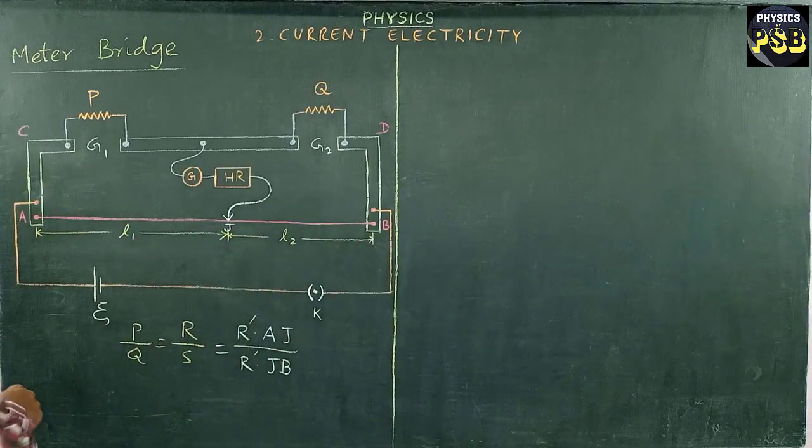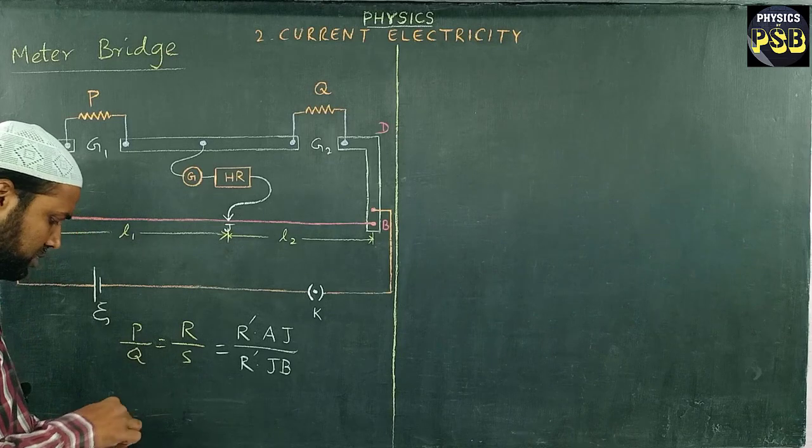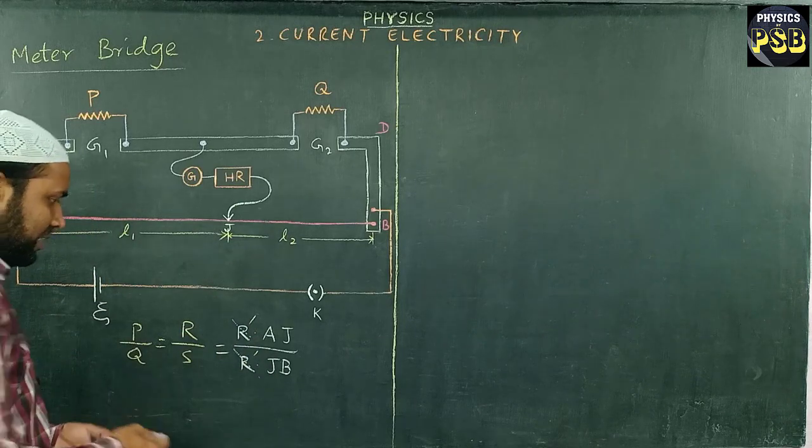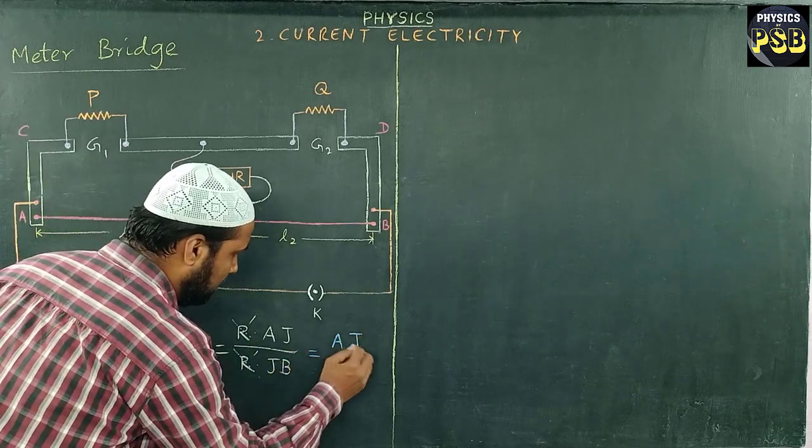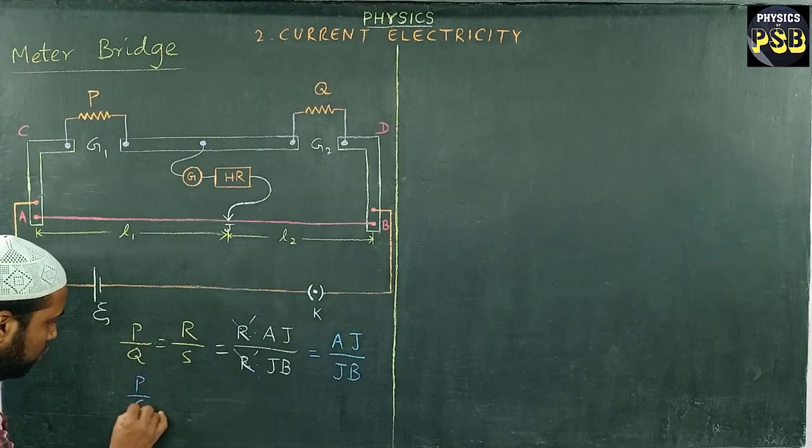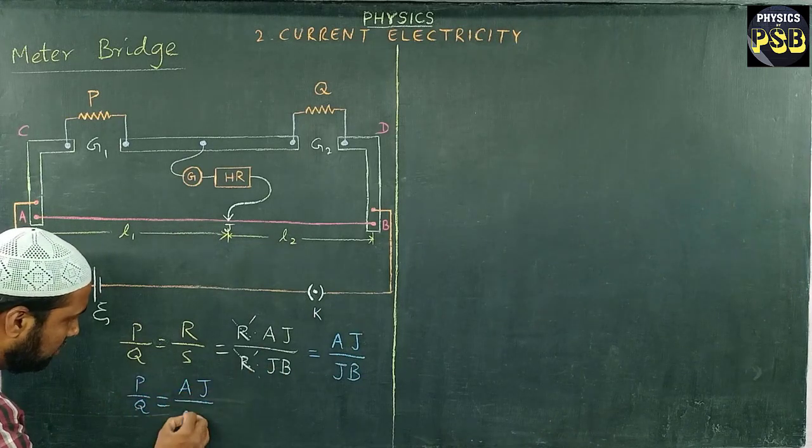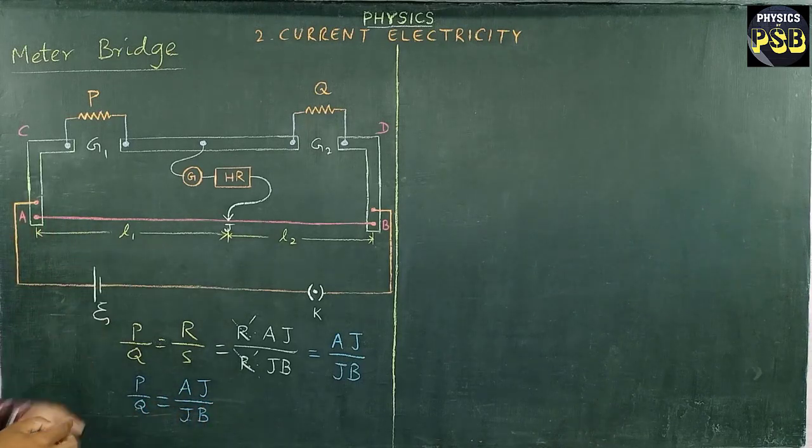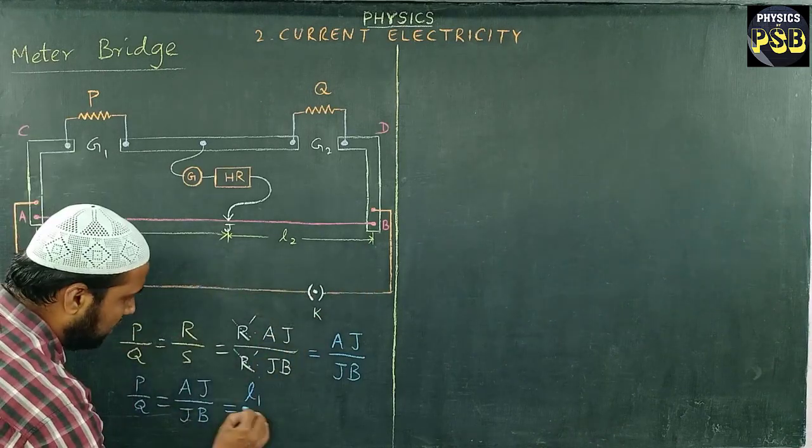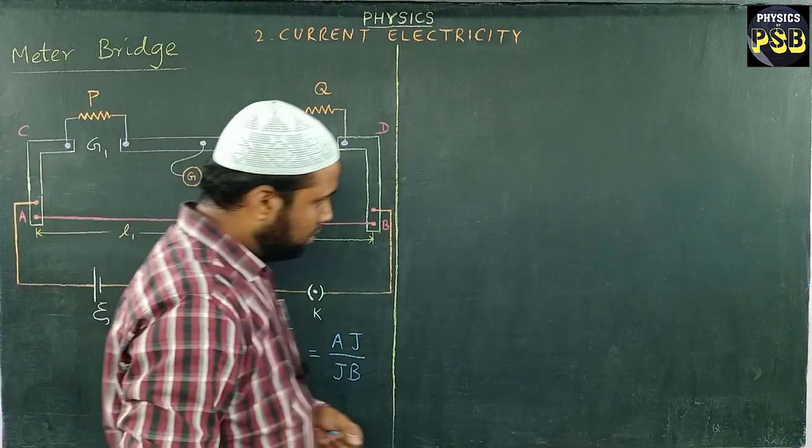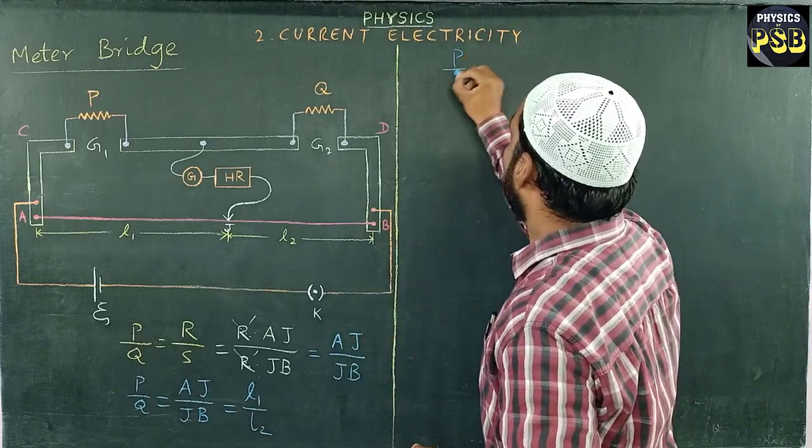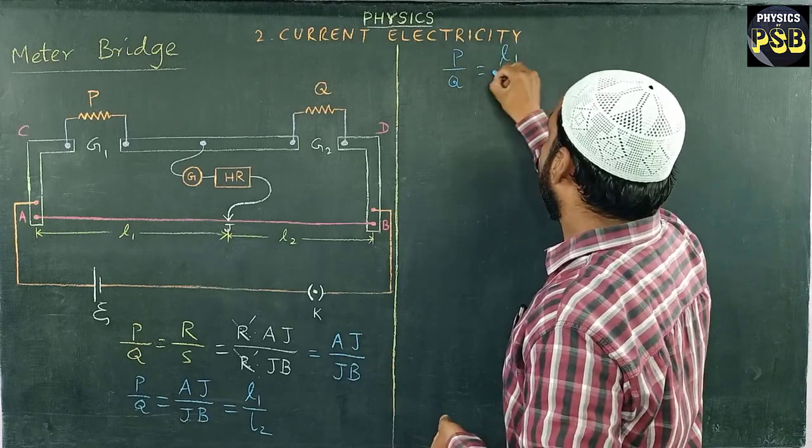I cancel these two parts, so I get AJ upon JB. So P upon Q equals AJ upon JB. From this diagram, the value of AJ is L1 and the value of JB is L2. So we get the equation P upon Q equals L1 upon L2.